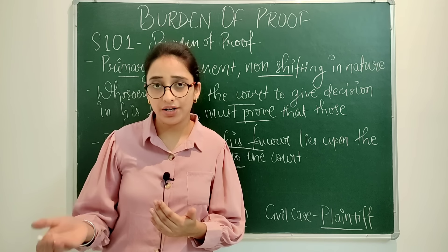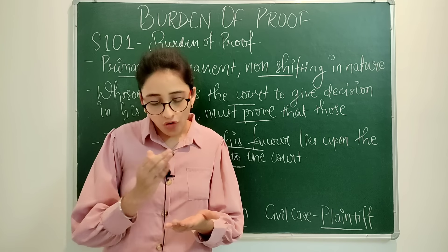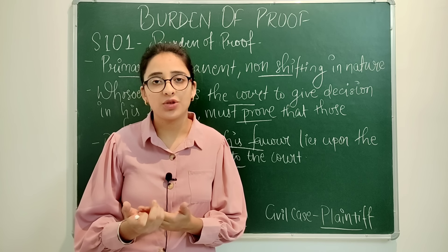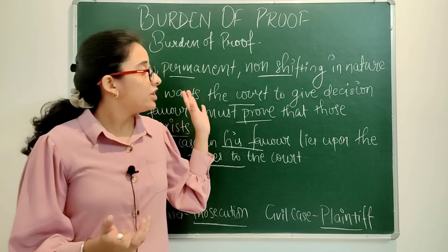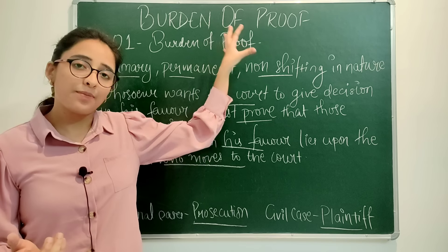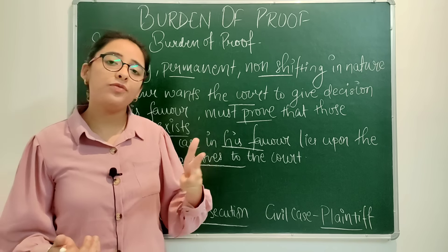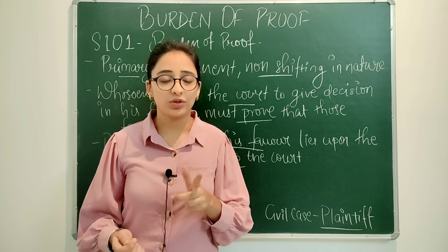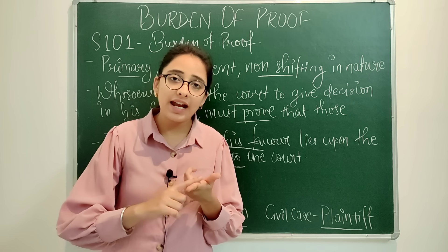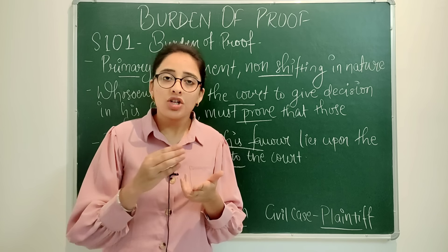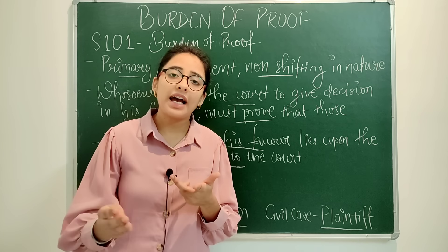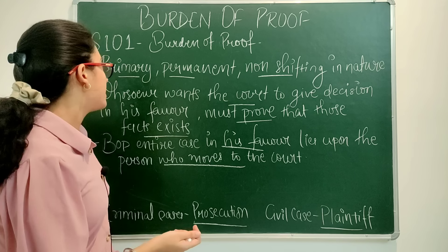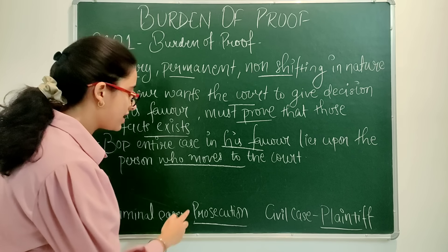There is another thing about onus of proof, discussed in section 102, which is shifting in nature. The burden of proof is primary. To understand the two types of proofs — first, the burden of proving the entire case, which is discussed in section 101. The prosecution or the plaintiff carries this.